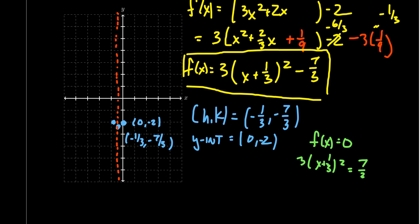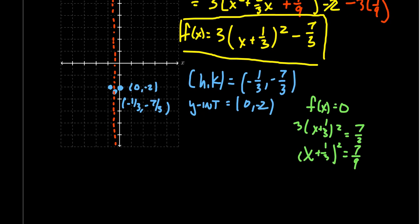Divide both sides by 3. That's going to give us 7 over 9. We're going to take the square root of both sides, in which case we end up with x plus 1 third is equal to, when we take the square root, we're going to get plus or minus square root of 7 over 3. And then we subtract the 1 third from both sides. Now we get our x-intercepts.